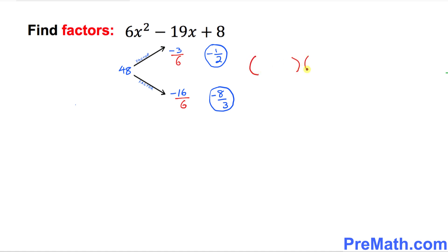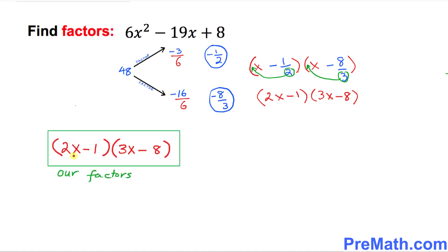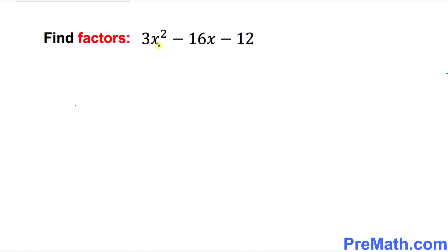Now we find the factors by putting down two parentheses with x in each. The two numbers are negative 1 over 2 and negative 8 over 3. The denominator 2 gets dragged to the front of the first x, and 3 goes to the front of the second x. So our factors are 2x minus 1 times 3x minus 8.